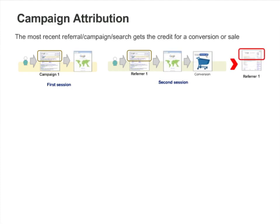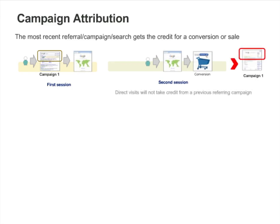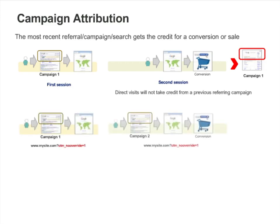However, if instead the visitor returns directly, then the AdWords ad — Campaign 1 — will still get credit for the sale. To prevent a specific referral or campaign from overriding a prior campaign, simply append UTMNoOverride=1 to all referring campaign links, as shown in the slide. This ensures that the conversion is always attributed to the original referrer, or first campaign the user clicked on. Therefore, in the example above, the original campaign will continue to get credit for the conversion.